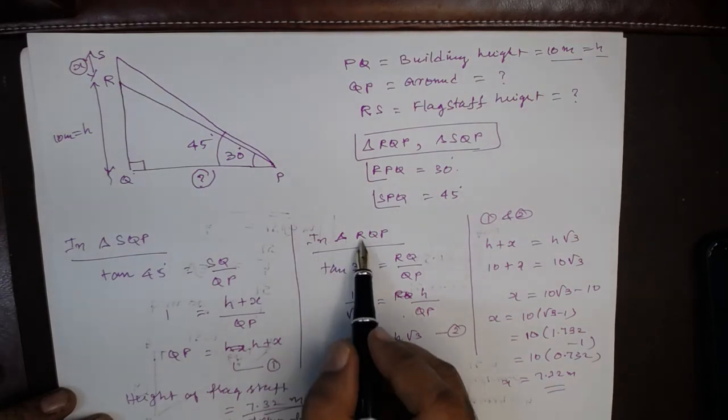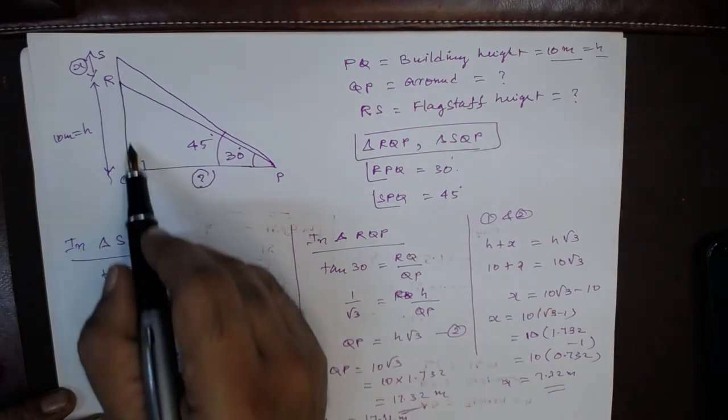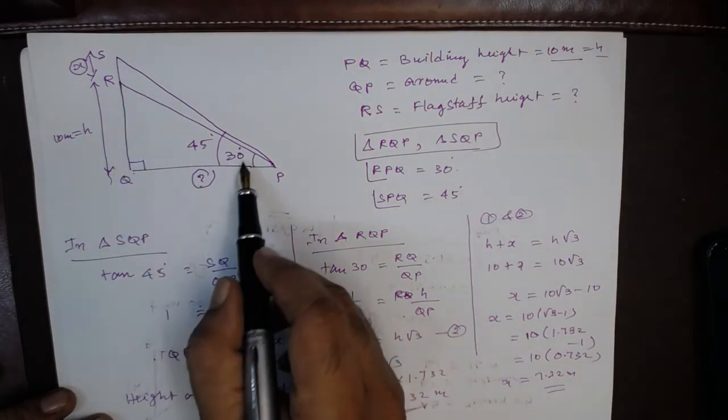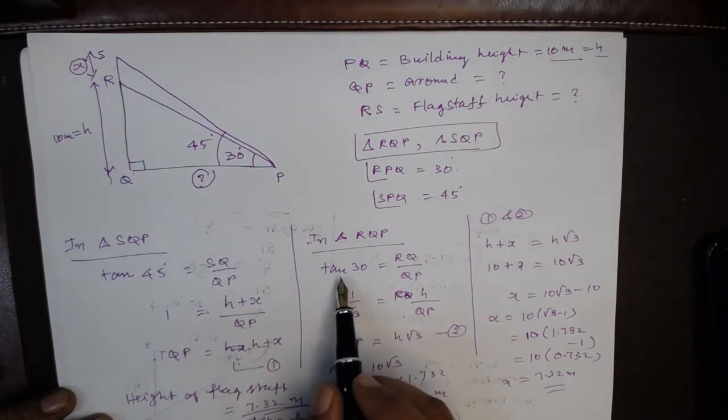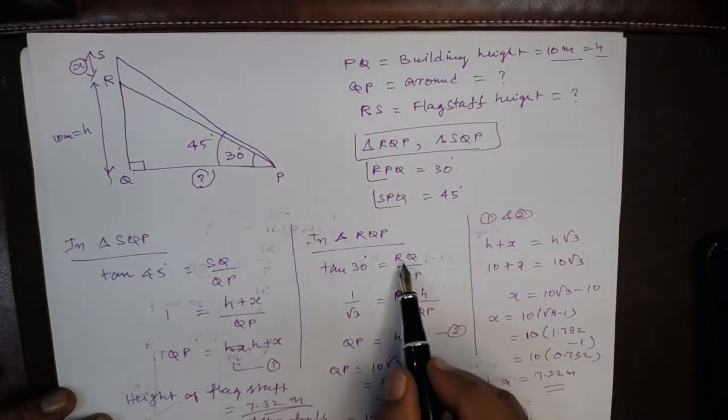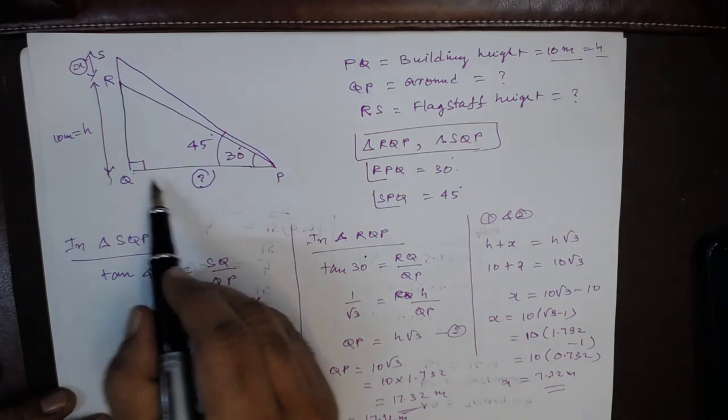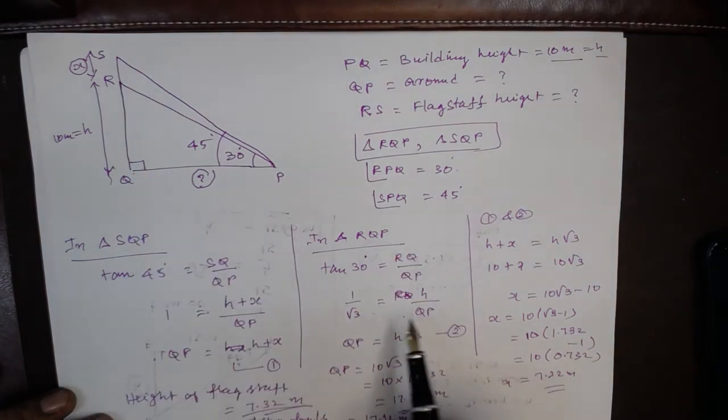In triangle RQP, the angle is 30 degrees. So tan 30 is equal to RQ, building height, divided by QP. That is H by QP. So QP is equal to H root 3. On both sides you have QP, so left hand side is equal to right hand side.